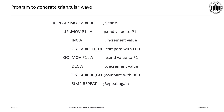Let us understand the program to generate a triangular wave. The first instruction, MOV A, #00H, loads the first value 00H into the accumulator. The next instruction, MOV P1, A, sends this value in the accumulator to Port 1 where the DAC is connected. As a result, 0V is generated. The next instruction, INC A, increments the value in A by 1, so now the value in A becomes 01H.